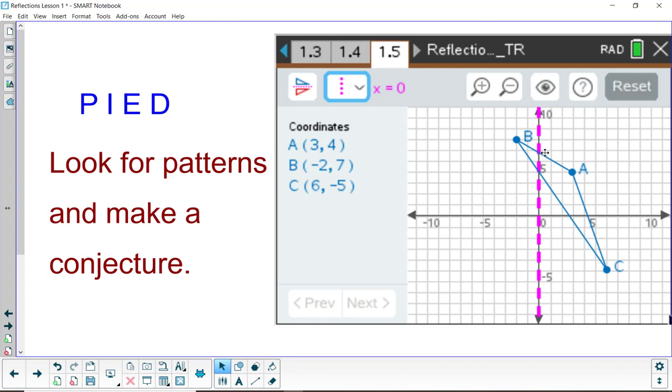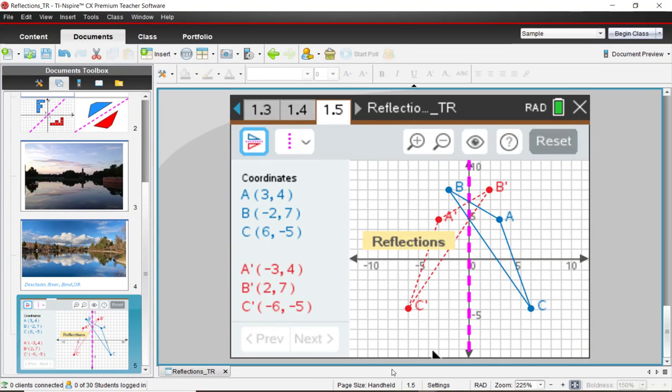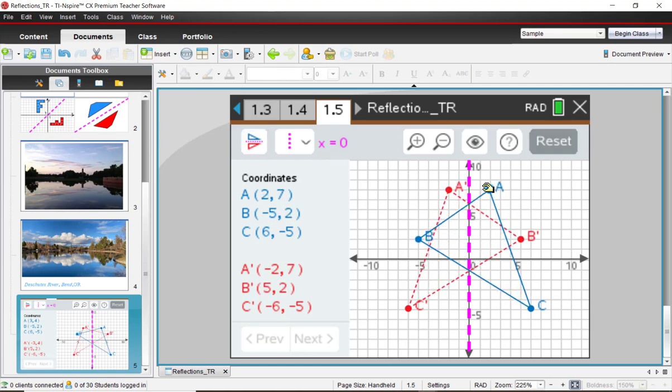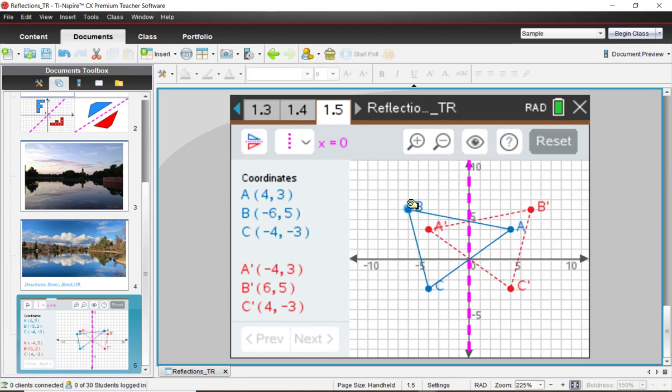And what we want to do is play with this and see if we can make a conjecture like we did before. So we're going to go back to the software. And grab and pull those points around and see if the conjecture, the ideas you thought, what you've observed, seem to hold true no matter where the triangle is. Look at the coordinates. This is reflecting about the y-axis or the line x equals 0.